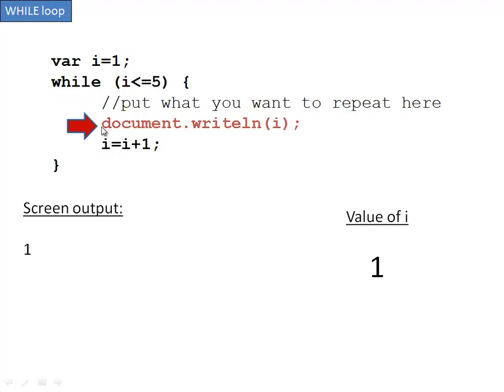Now it goes inside the curly braces and does whatever you tell it to do. In this case, I'm having it document.writeLine i. So instead of just some text message, it's actually pulling the value from i and writing it. If you notice, document.writeLine i, it's writing 1, because at this moment, i is 1.